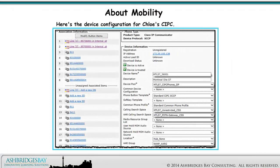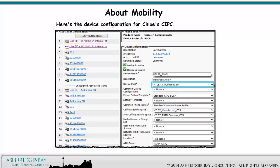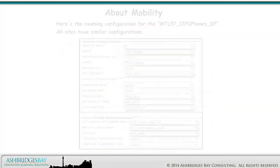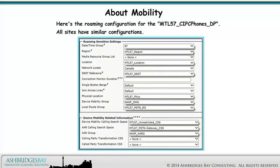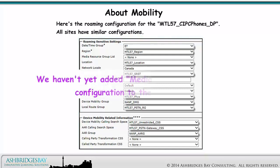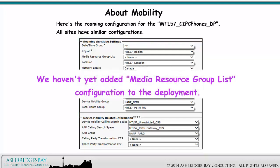Here's the device configuration for Chloe's CIPC. The dial plan configuration elements are: the device pool is set to Montreal 57 CIPC phones device pool; the calling search space is set to Montreal 57 unrestricted calling search space; the AAR calling search space is set to Montreal 57 PSTN gateway calling search space; and the AAR group is set to NANP AARG. Here's the roaming configuration for the Montreal 57 CIPC phones device pool — all sites have similar configurations. We haven't yet added media resource group list configuration to the deployment.